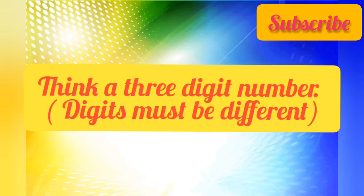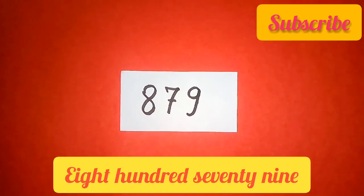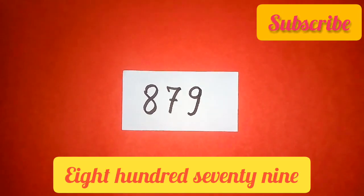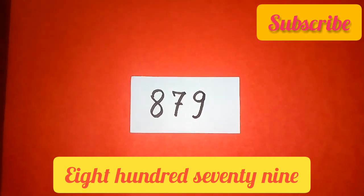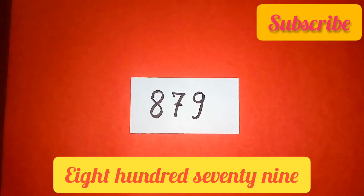First of all, think a three digit number. But the condition for this is, the digits of the number must be different. So think a three digit number, as I thought, let it is 879. Your number may be anything, my number is 879. Its digits are different.